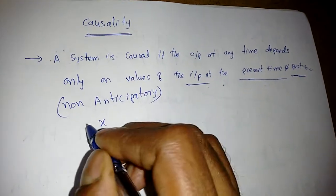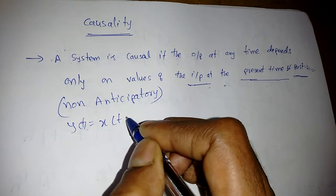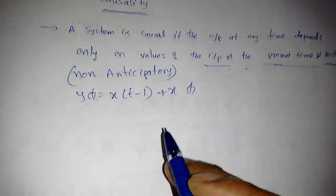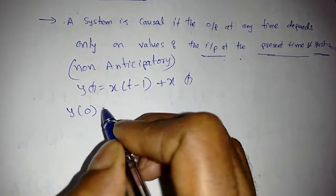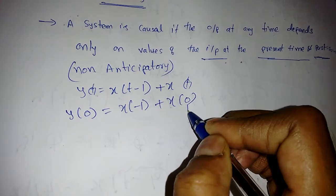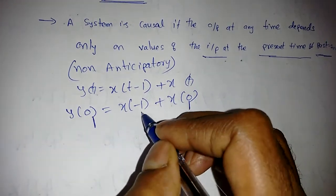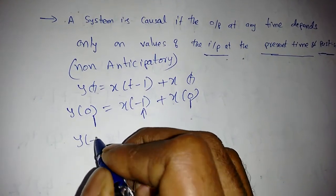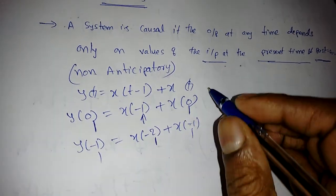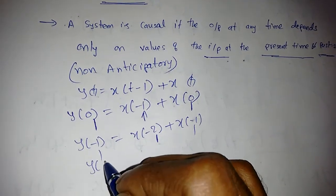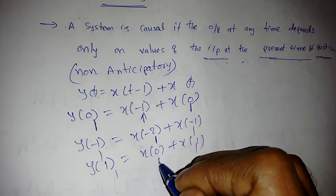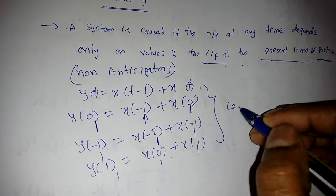Suppose y(t) = x(t-1) + x(t). To check causality, substitute t=0: y(0) = x(-1) + x(0). Here x(0) is the present input and x(-1) is a past input — so this is causal at t=0. But for t=1: y(1) = x(0) + x(1), where x(1) is present and x(0) is past. However checking positive values gives x(0) + x(1) where this involves a future term — so the system is non-causal.